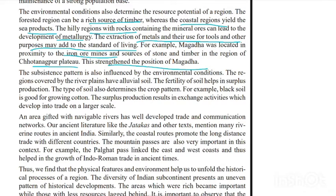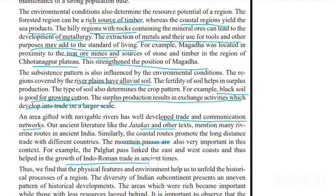The regions covered by river plains have alluvial soil, which aids in crop cultivation. Black soil is good for growing cotton. The surplus production results in exchange activities which develop into trade on a large scale. An area gifted with navigable rivers has well-developed trade and communication networks. Our ancient literature like the Jatakas and other texts mention many riverine routes in ancient India. Similarly, the coastal routes promote long-distance trade with different countries. The mountain passes are also very important in this context — for example, the Palghat Pass linked the east and west coast and helped in the growth of Indo-Roman trade in ancient times.